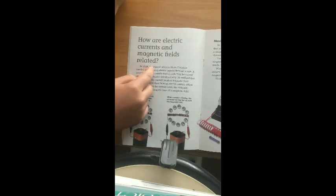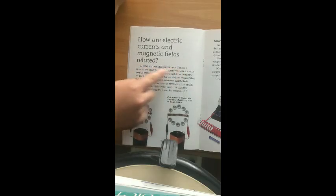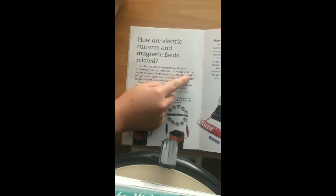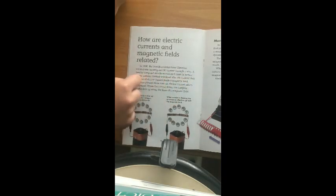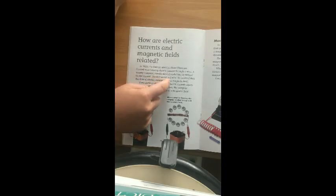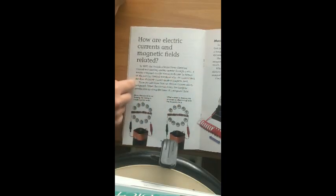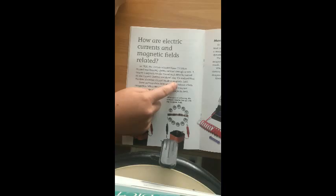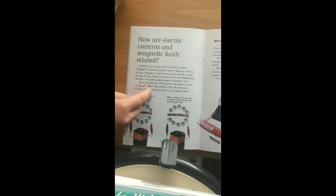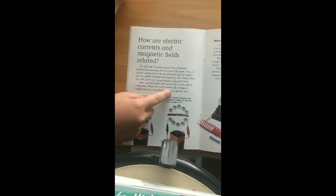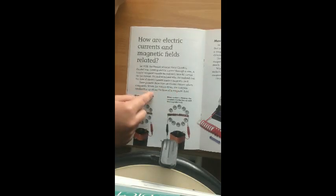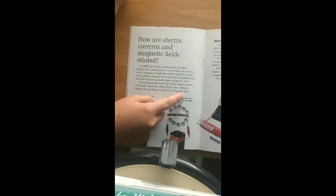In 1820, the Danish scientist Hans Christian Ørsted was running electric current through a wire. A nearby compass's needle moved each time he turned on the current. Ørsted wondered why. He realized that the flow of electric current made a magnetic field. These pictures show how an electric current affects compasses. When the current flows, the compass needle lines up along the lines of a magnetic field.